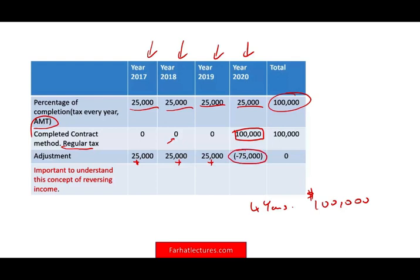Let's see when everything is all said and done. For AMT over four years, you reported $100,000. For regular tax, you reported $100,000. Except AMT — the government wants their money a little bit earlier. Notice: plus $25, plus $25, plus $25, minus $75 — the net amount is zero. So this is an example of a revenue adjustment.